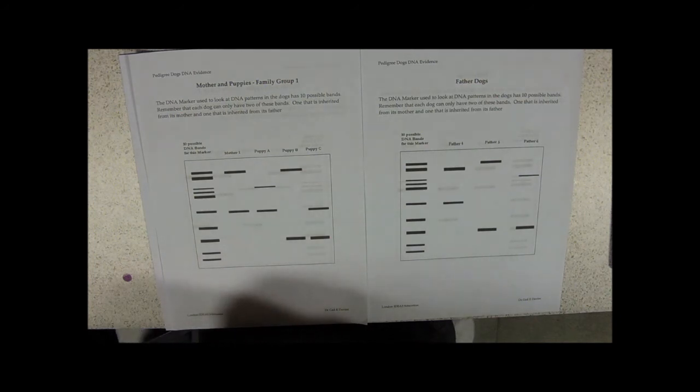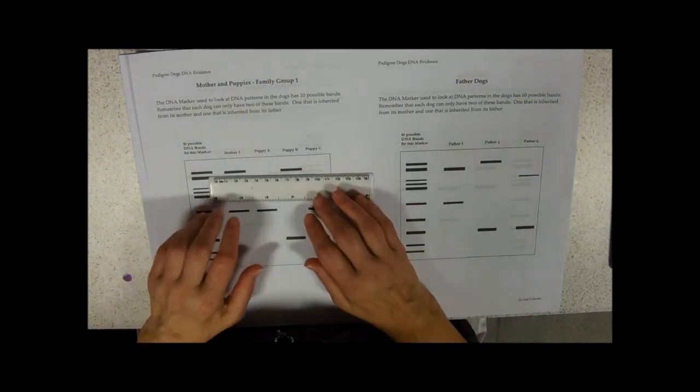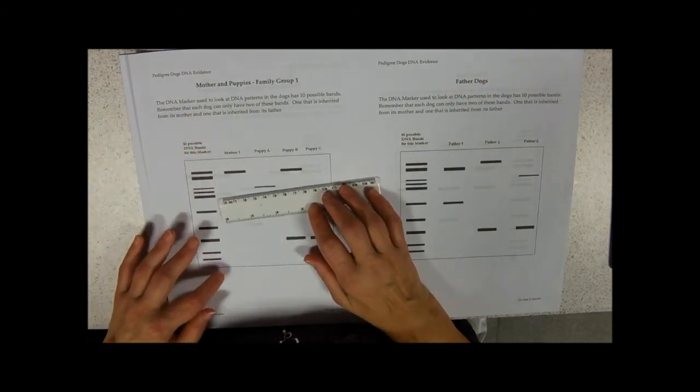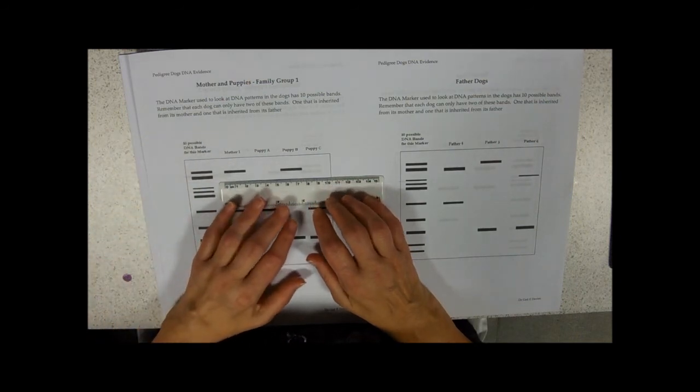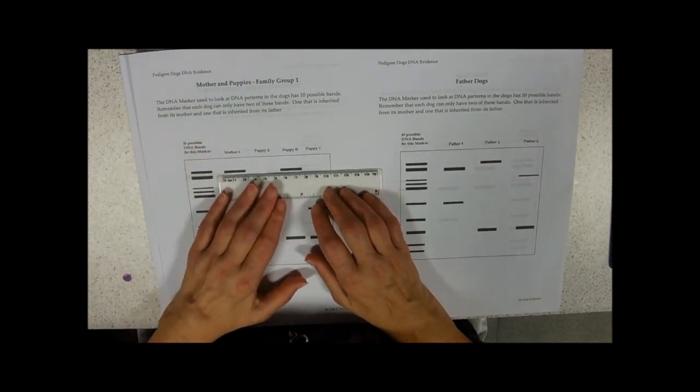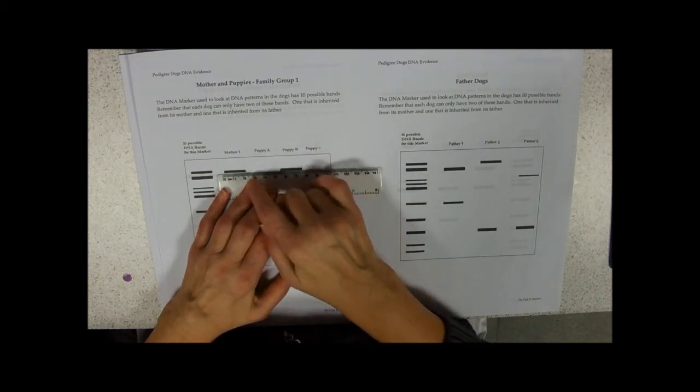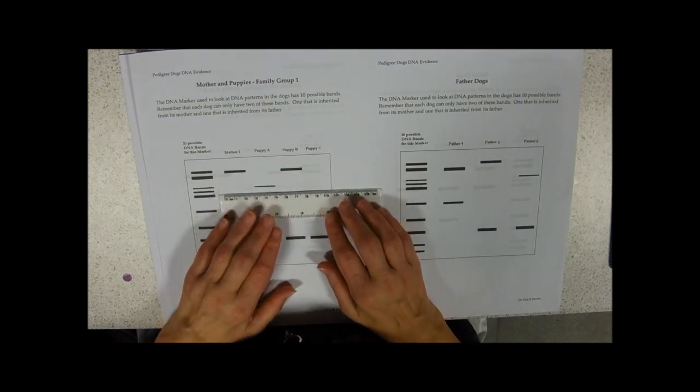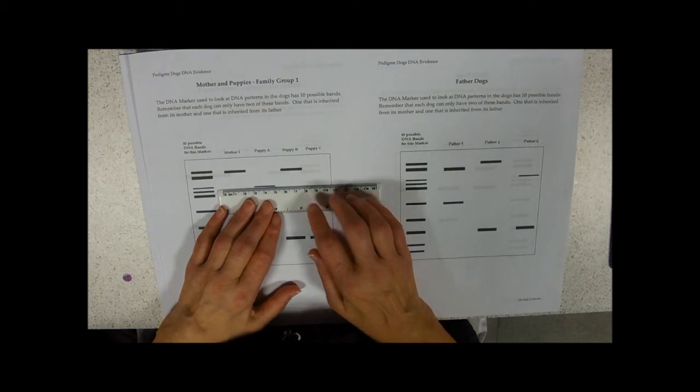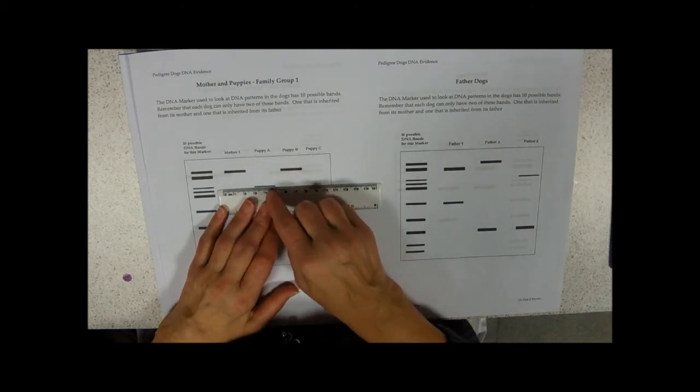I'm kind of looking for a ruler now, oh thank you Hannah. So remember these down the side are the marker genes just to show the relative positions, markers or DNA fragments. So puppy B has inherited that marker band from its mother.